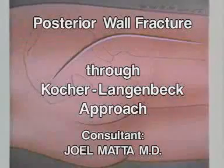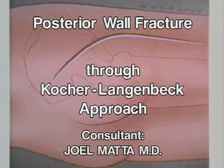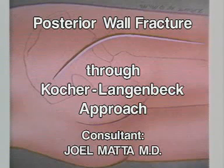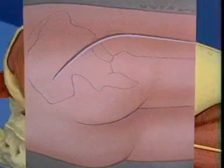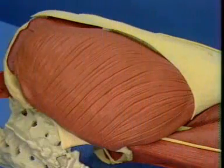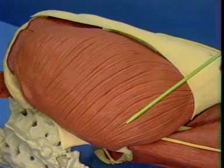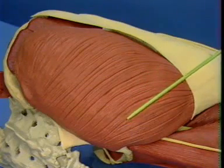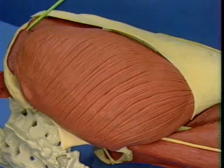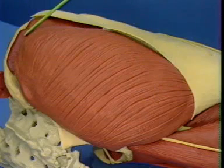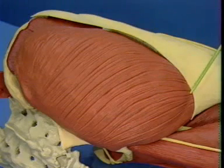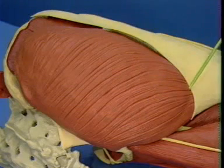The first exercise of the fracture of the posterior wall is performed through the Kocher-Langenbeck approach. For this approach and this fracture, the patient is placed in a lateral position on a standard table. The surgeon stands behind the patient, with the head to the left and the foot to the right.